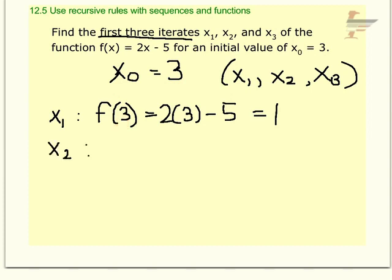And then you just keep going. So it's just a series of inputs. Now I'm going to do f of 1, because my last output was 1, so that becomes my next input. And that's 2 times 1 minus 5, and of course, that's negative 3.